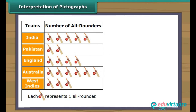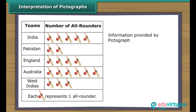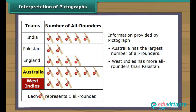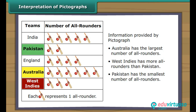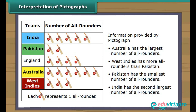Let us interpret one more pictograph. This pictograph shows details of all-rounders in five cricket teams of the world. Each picture represents one all-rounder. It is clear from the pictograph that Australia has the largest number of all-rounders. West Indies has more all-rounders than Pakistan. Pakistan has the smallest number of all-rounders. India has the second largest number of all-rounders.